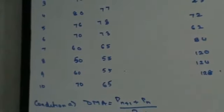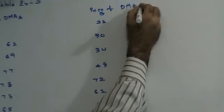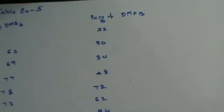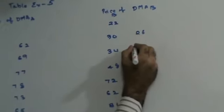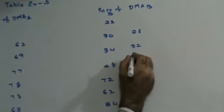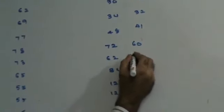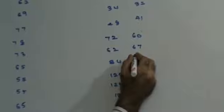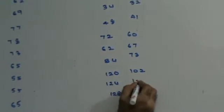Similarly, we can find the daily moving average for B. The DMA values for B are: 26, 32, 41, 60, 67, 73, 102, 122, and 126.